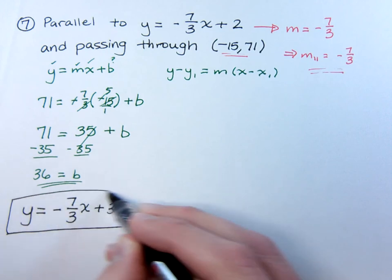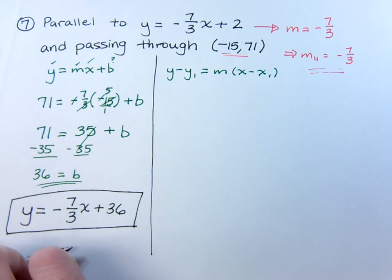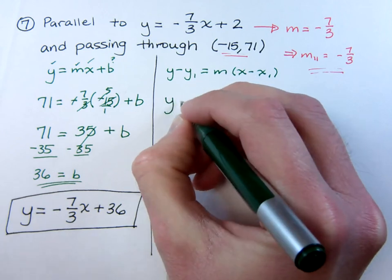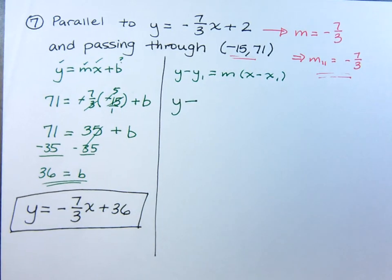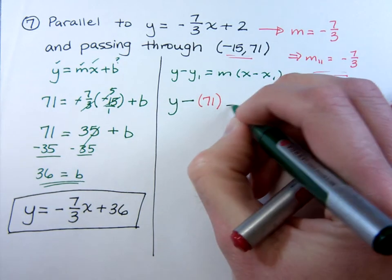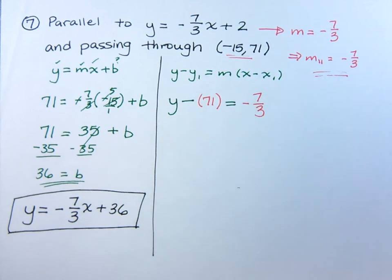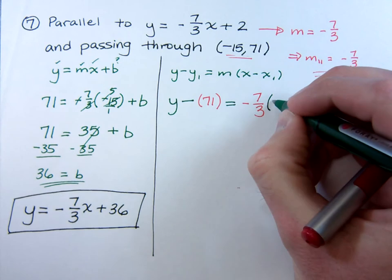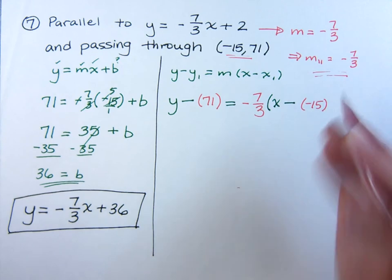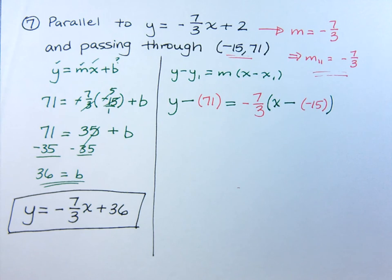Now if you were to use the point slope formula instead, you should still come up with the same answer. So let's check that guy. So here, we have y minus your y1 is 71 equal to your slope, which is a negative 7 thirds times the quantity x minus x1 is negative 15. So all we've done here is just plug the information into that formula.